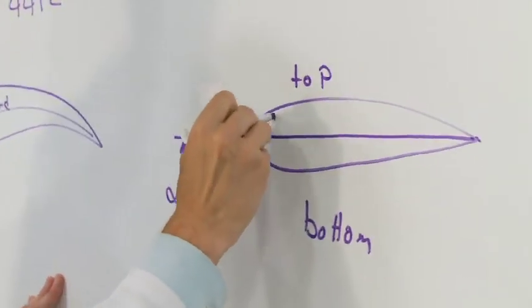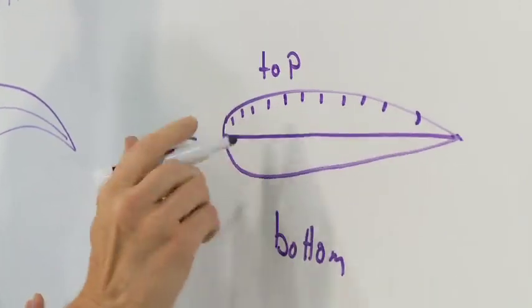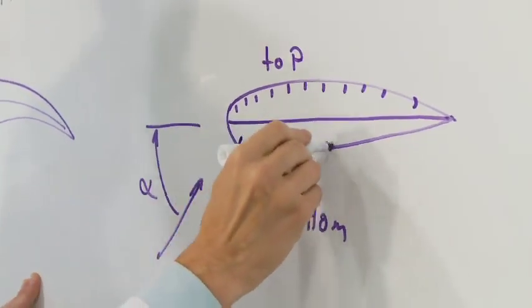The pressure ports run along the top of the airfoil so that we can measure the top pressure distribution and the bottom.